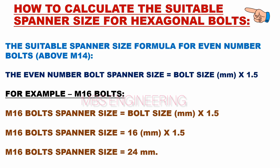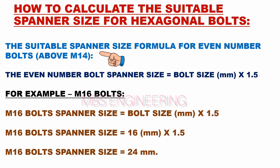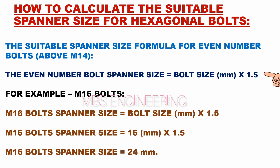The suitable spanner size formula for even number bolts grade above M14 is as follows: the even number bolt spanner size equals bolt size in mm multiplied by 1.5.